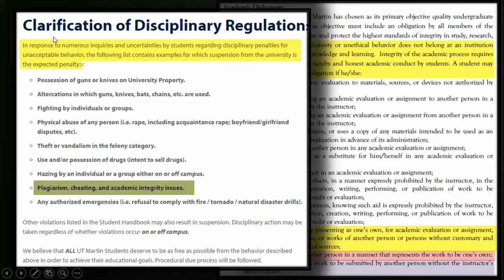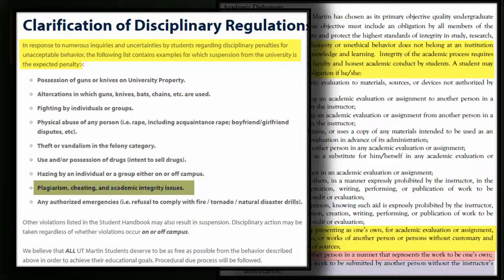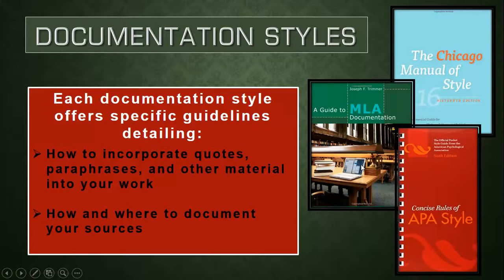Here on the university's website under Student Affairs and Student Conduct, under clarification of disciplinary regulations, it says that in response to numerous inquiries and uncertainties by students regarding disciplinary penalties for unacceptable behavior, the following list contains examples for which suspension from the university is the expected penalty. That includes plagiarism, cheating, and academic integrity issues. So it is indeed a very serious business.